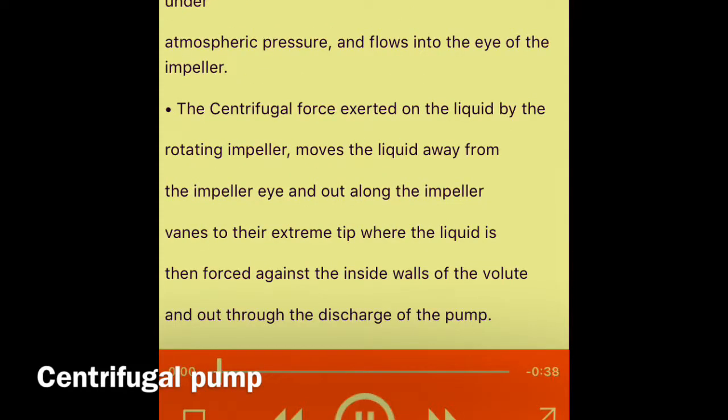The liquid enters the inlet of the centrifugal pump under atmospheric pressure and flows into the eye of the impeller. The centrifugal force exerted on the liquid by the rotating impeller moves the liquid away from the impeller eye and out along the impeller vanes to their extreme tip, where the liquid is then forced against the inside walls of the volute and out through the discharge of the pump. Due to the reduction of pressure occurring at pump inlet and impeller eye, liquid is drawn into the pump in continuous flow as it moves through the pump.